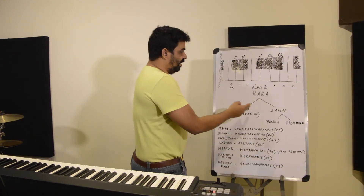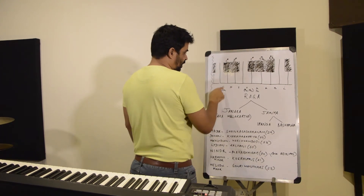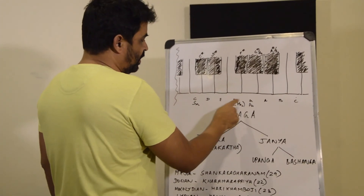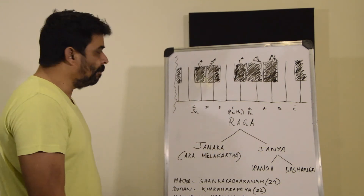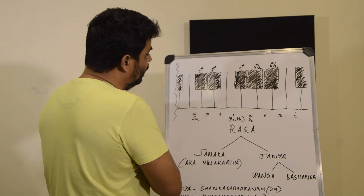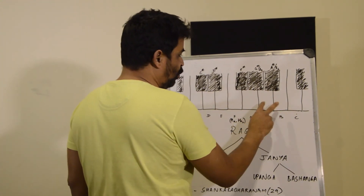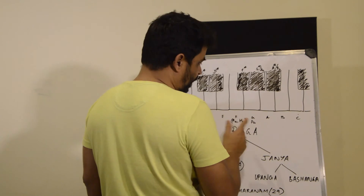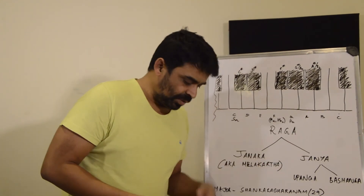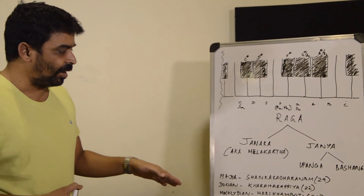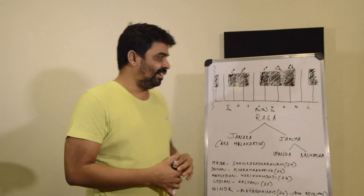So does our major scale — comprised of all the white keys — follow this nomenclature? Yes: it has Sa (C), it has Pa (G), it has F which is Shuddha Madhyamam (Ma 1). Does it have two keys from C sharp, D, D sharp, E? Yes — it has D and E, where D becomes Ri and E becomes Ga. Does it have two swaras from G sharp, A, A sharp, B? Yes — it has A and B, where A becomes Da and B becomes Ni. So the major scale corresponds to the ragam called Shankarabarnam, and we'll see in a minute how there are 72 scales and why Shankarabarnam is the 29th in that ordering.